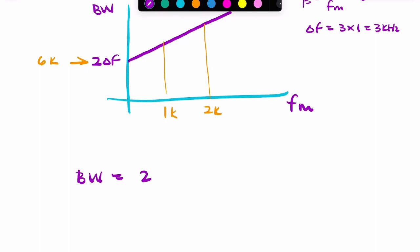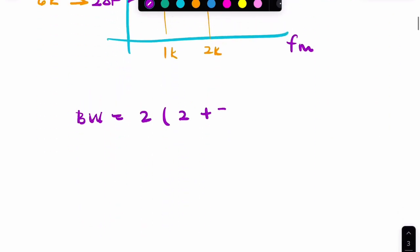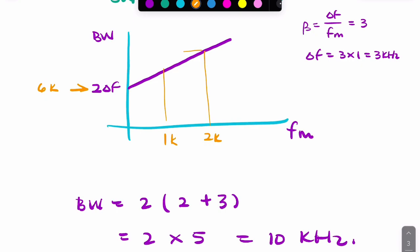It's simply 2 times the new fm, which is 2, plus the frequency deviation, which is unchanged, which is 2 times 5, 10 kilohertz. So your bandwidth would go up.